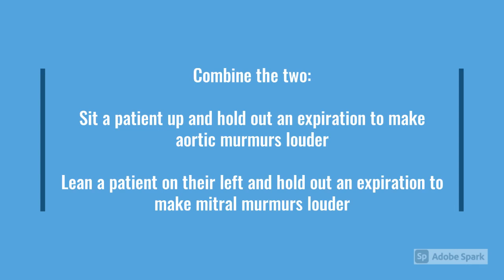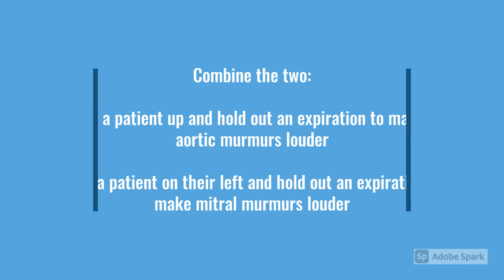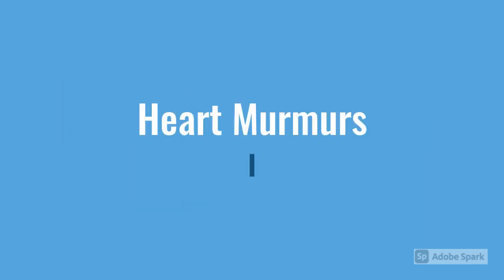If you sit a patient forward and get them to hold out on expiration, that's going to make an aortic murmur louder. If you get them to lean on the left side and hold out on expiration, that's going to make a mitral murmur louder.